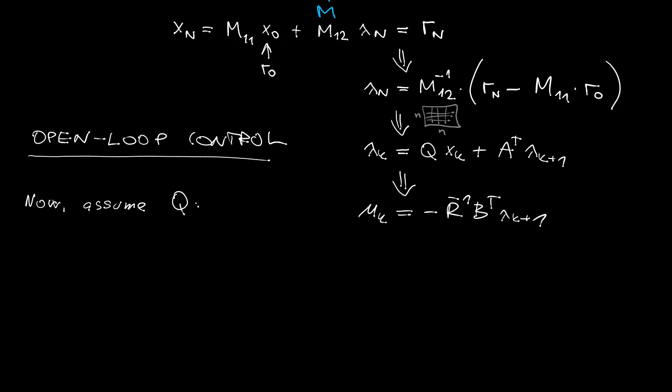Now, let's make some more investigations. In order to make it feasible, we will assume that the Q matrix is zero, in which case we are doing so-called minimum energy control. Well, in fact, I should have inserted the R matrix, but it will not change the meaning.